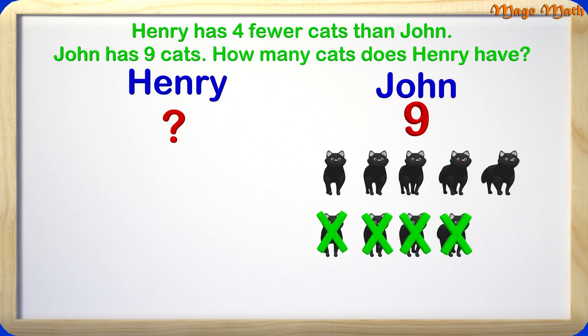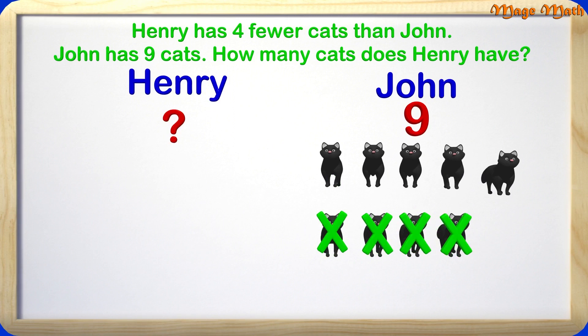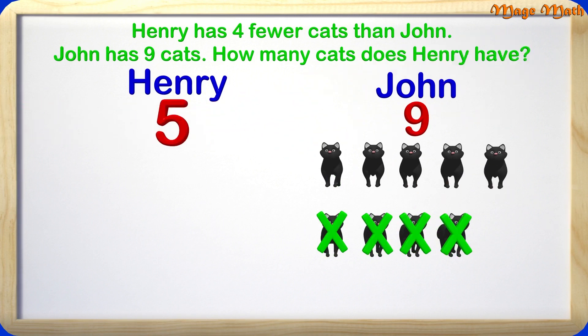Here are 9 cats, which represent how many John has. Henry has 4 fewer, so we will cross 4 of them out. Now we can count the remaining cats: 1, 2, 3, 4, 5. The answer is 5. Henry has 5 cats. Great job again, guys!